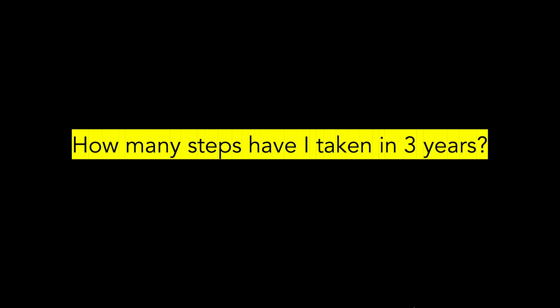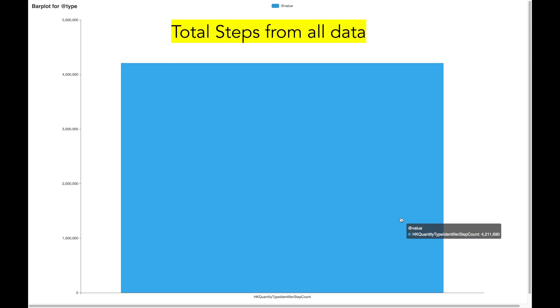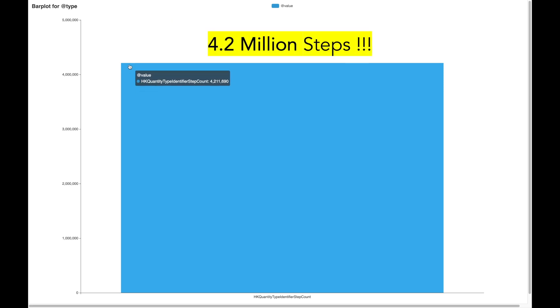I have had my iPhone for 3 years now, and the question came to my mind: how many total steps have I taken in 3 years? So I started making analysis on the data stored in my iPhone health app. This bar graph shows the total number of steps taken over the last 3 years for the record type step count — 4.2 million steps. I was surprised, as the standard iPhone health app does not give me such analysis.